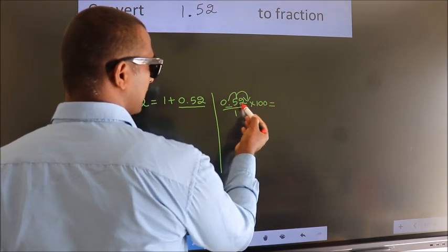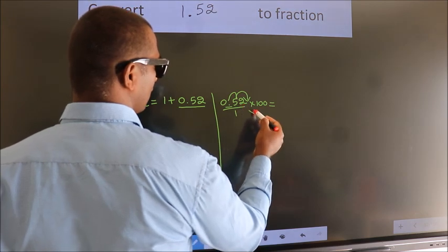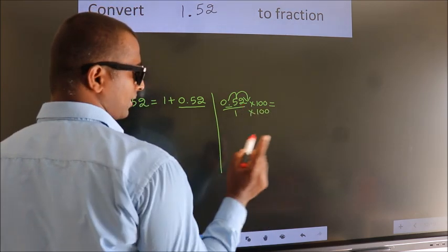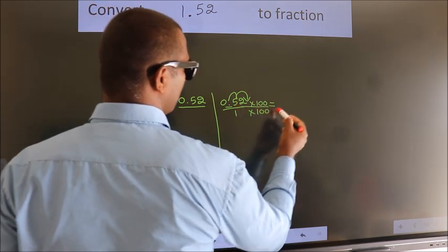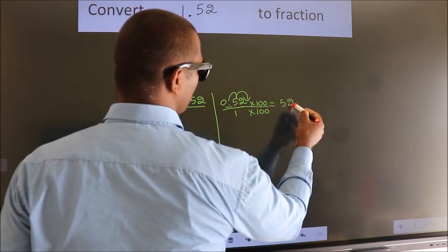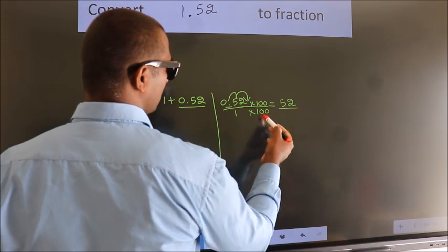Whatever we are doing in the numerator, in the denominator also do the same. Next, 0.52 into 100 is 52. 1 into 100 is 100.